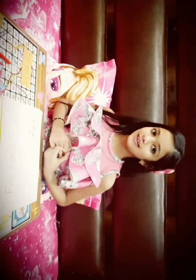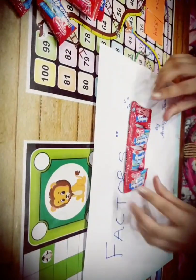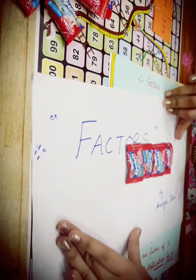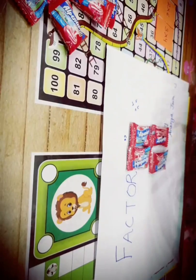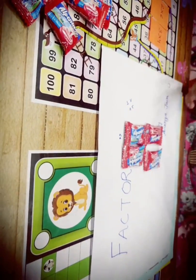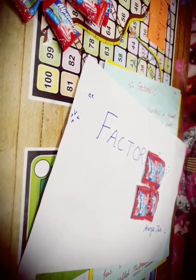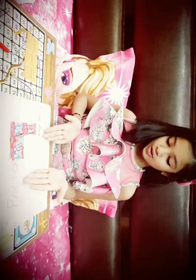First of all, we start with an activity. First we take four candies. In how many ways can we put these four candies? It means in one row there are four candies, and in four rows there is one candy. In two rows there are two candies. Remember, we have to put equal candies in one row. This is not a correct way to put the candies.